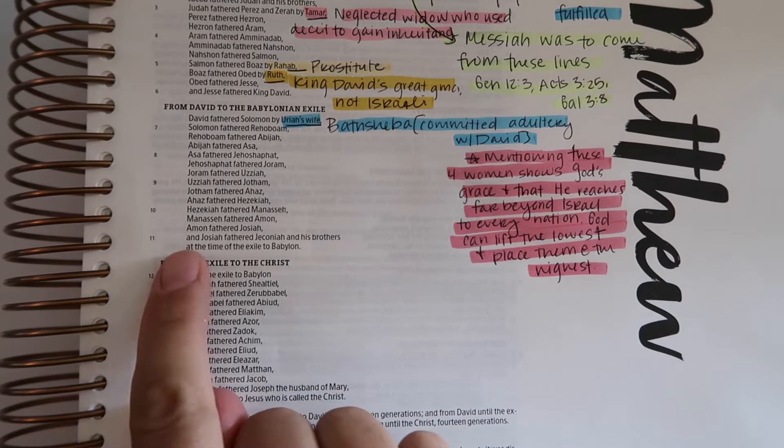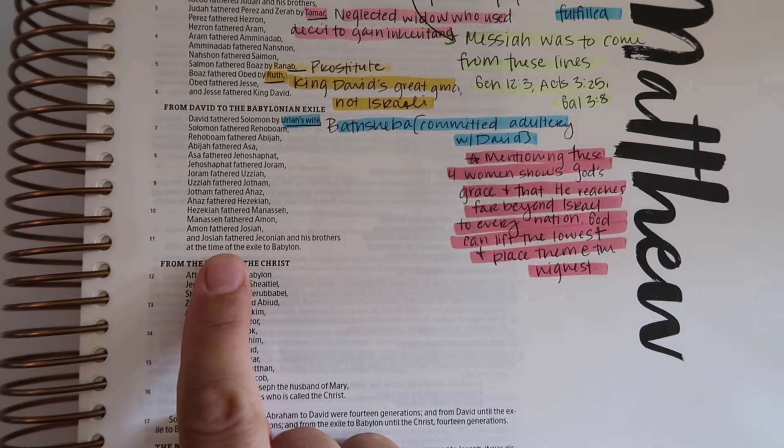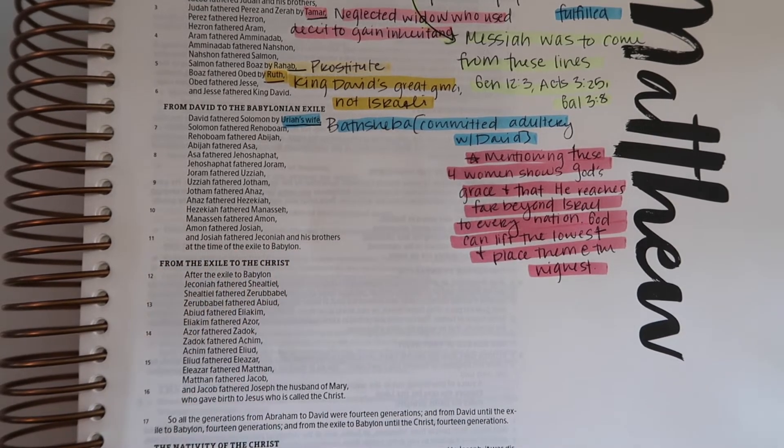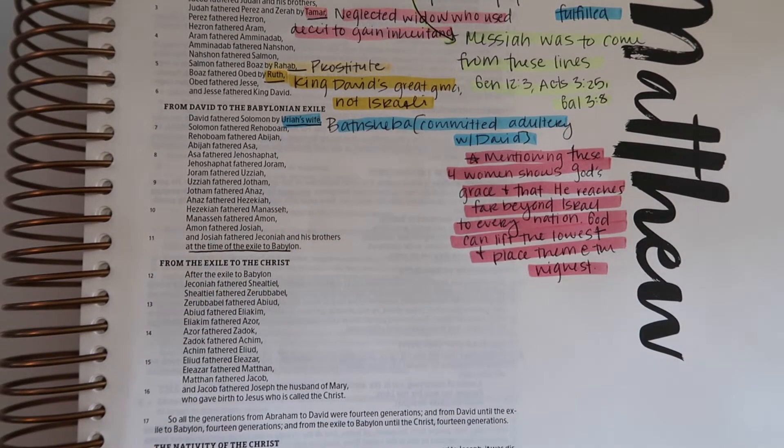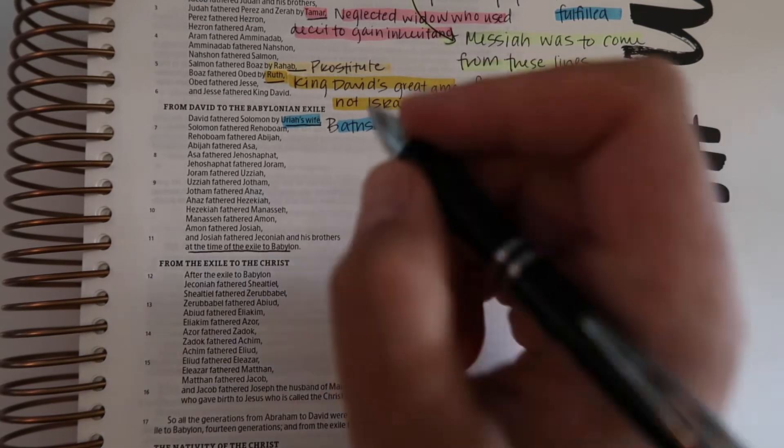I'm gonna go all the way down to where it says Josiah fathered Jeconiah and his brothers at the time of the exile to Babylon. This is when King Nebuchadnezzar took the southern tribe of Judah in captivity in Babylon. I'm going to note that.